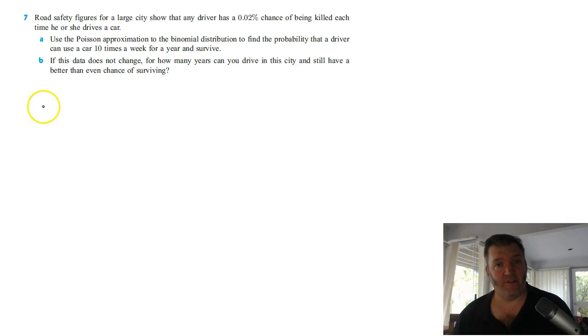Back again with question 7, still from exercise 25G Poisson distribution. Road safety figures for a large city show that any driver has a 0.02% chance of being killed every time he or she drives the car. I don't think it's quite that high, but that's scary if it is. Use the Poisson approximation to the binomial distribution to find the probability that a driver can use a car 10 times a week for one year and survive.